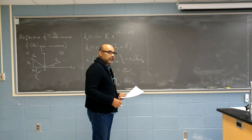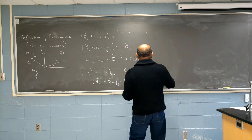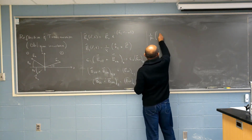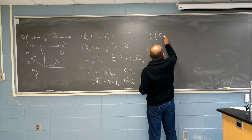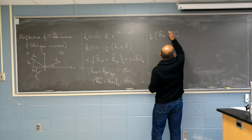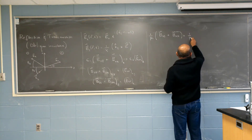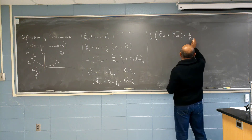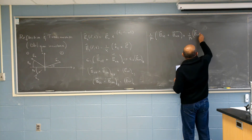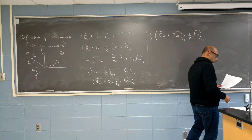And the last one is the tangential component of H is continuous because there are no free currents. So, tangential is one over mu one, and then B zero I plus B zero R — incident and reflected on one side — and the transmitted on the other side. This is mu2, mu1, mu2, B zero transmitted. And this is the X, Y, X, Y components.